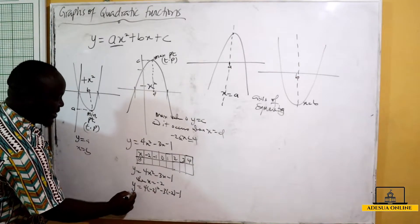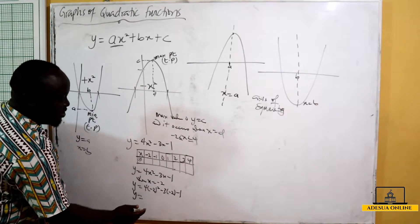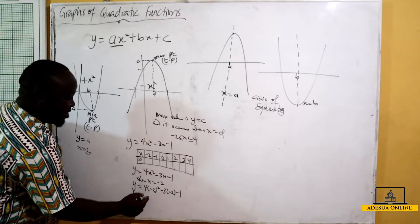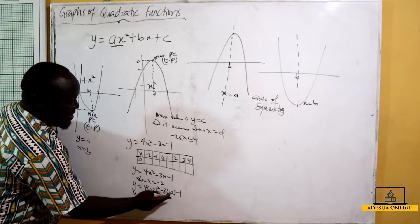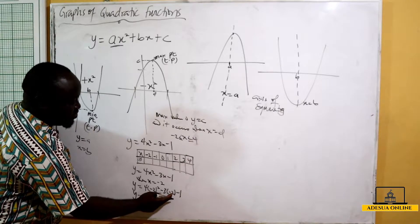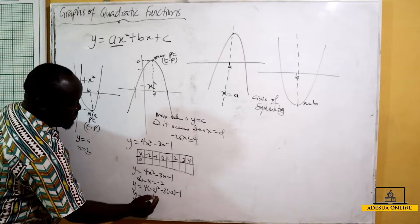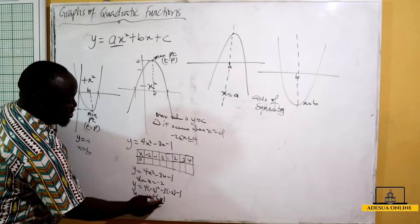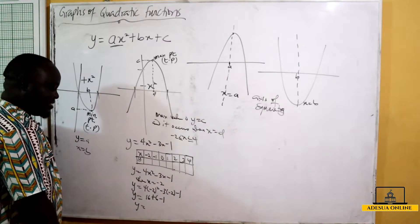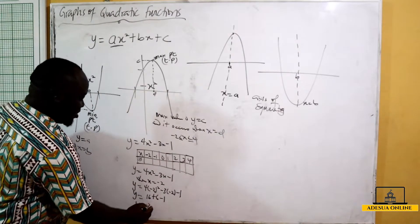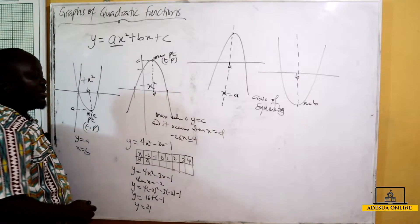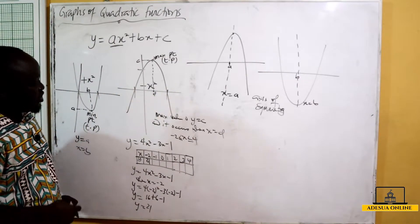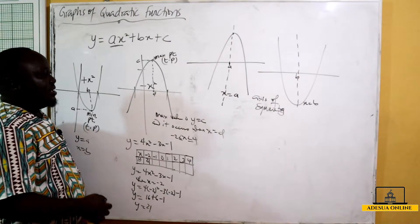Solving this: (-2)² = 4, so 4 × 4 = 16. Then -3 × -2 = +6, so we have 16 + 6 - 1. That gives y = 21. We put 21 in the table and do the same for all other x values.